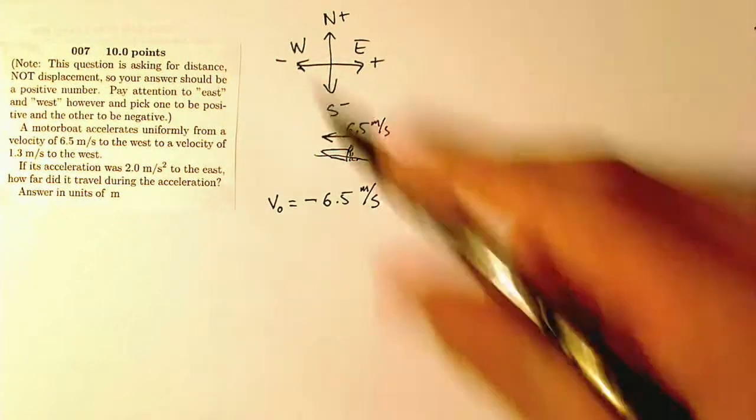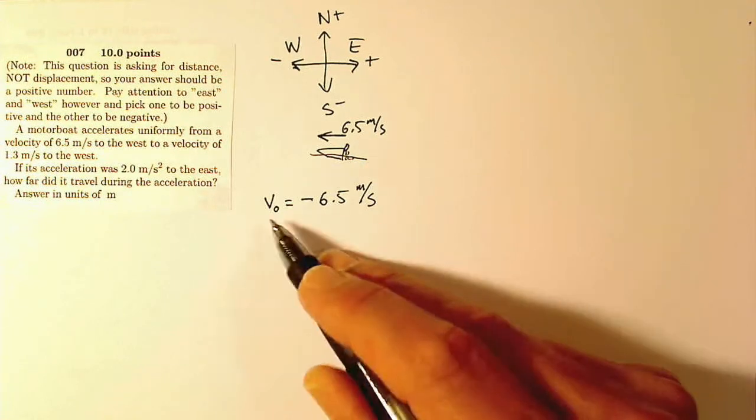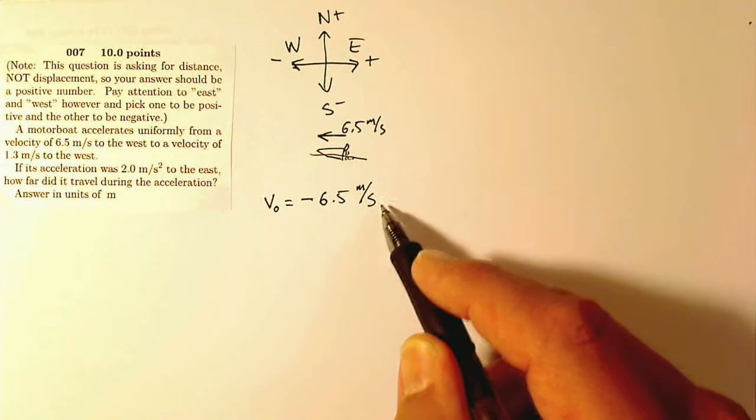Here, let me pull this down a little bit. Now you can see, north is positive. So I'm starting off at negative 6.5 meters per second or a velocity of 6.5 meters per second to the west.